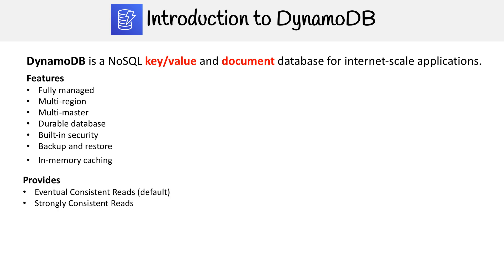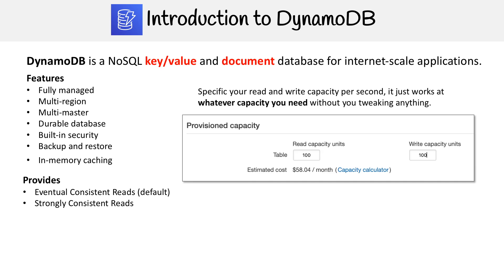At scale, it can provide eventual consistent reads and strongly consistent reads, which we will talk about in the DynamoDB section — so don't worry if that doesn't make sense just yet. You can specify the read and write capacity per second, so whatever you need, you just say 'I need 100 reads and writes per second' and then you pay that cost.